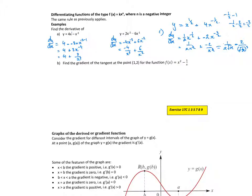One last little one: find the gradient of the tangent at the point. So f(x) equals x squared minus 1/x. I'm going to rewrite it — 1/x is the same as x to the minus 1. So f'(x) is equal to: 2 at the front, take 1 from the power, minus 1 times a negative gives positive x to the minus 1 minus 1, which is minus 2. So that's my derivative: 2x plus 1 over x squared.